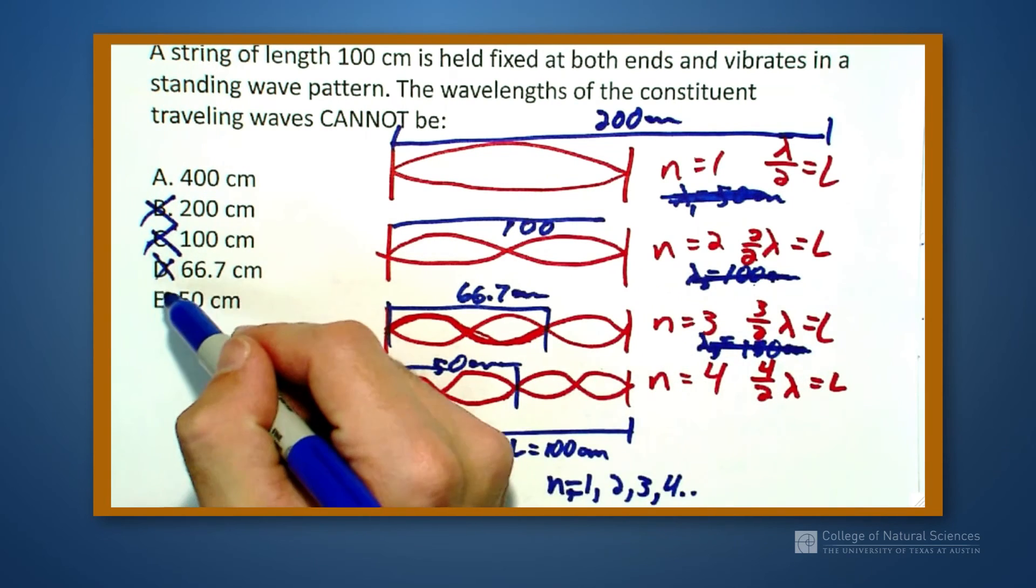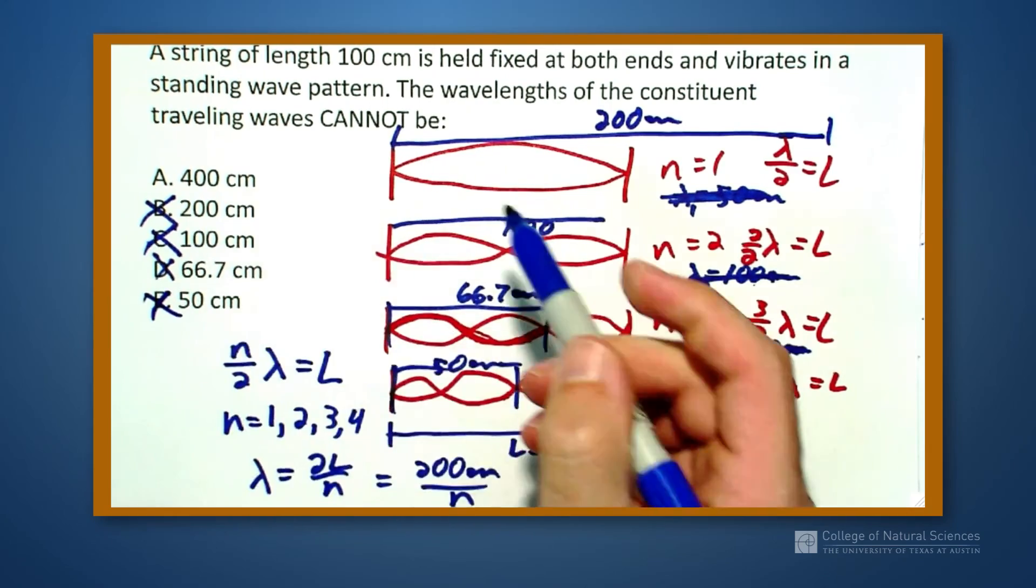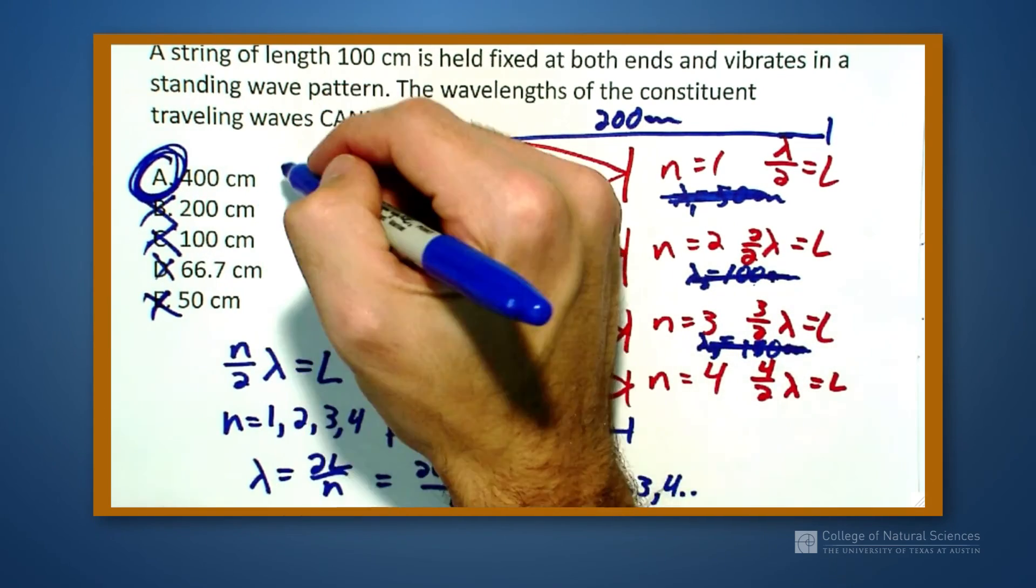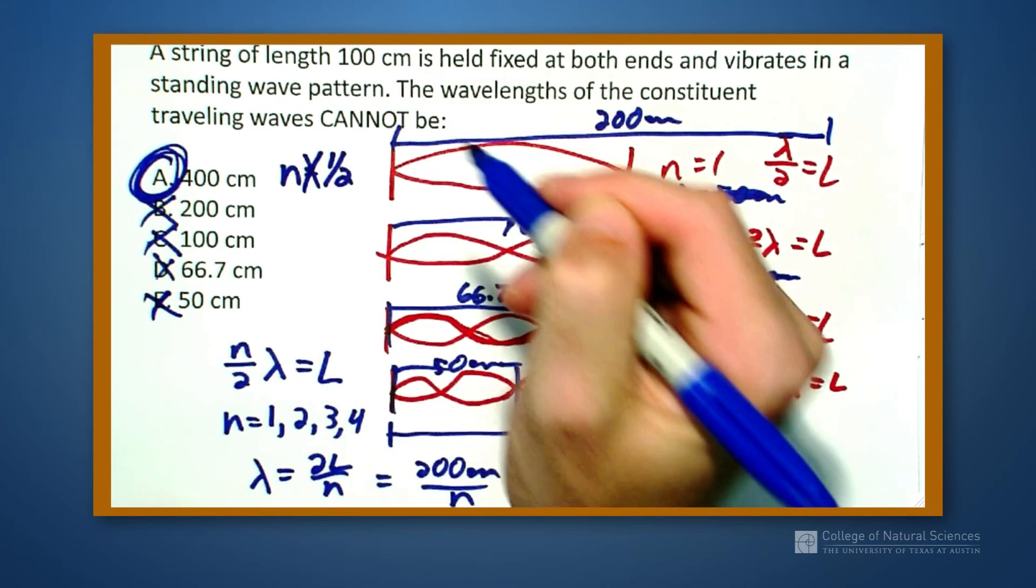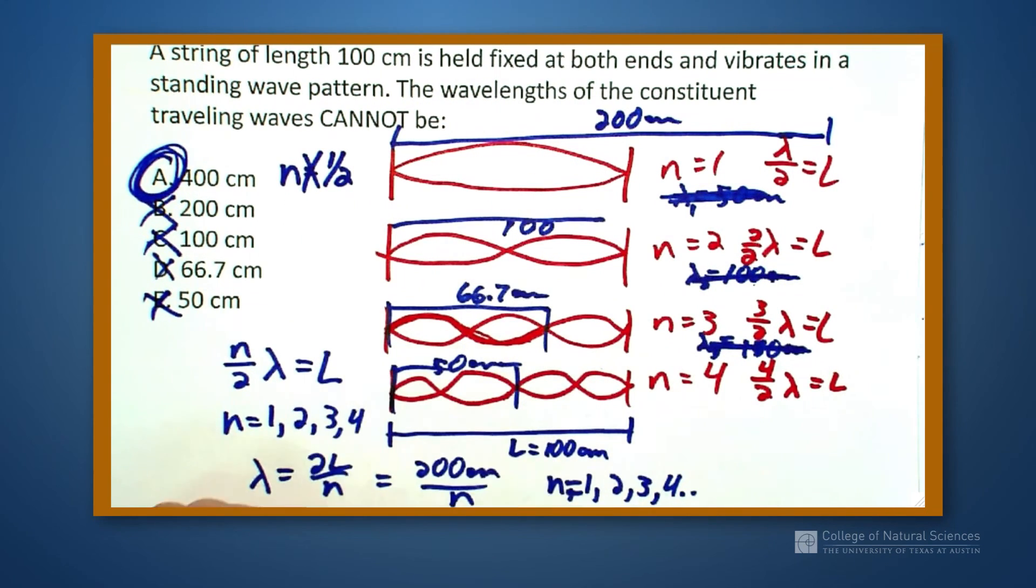So the only one that I can't get is 400 because for 400, n would have to be equal to 1 half. But we're not allowed to have n equal 1 half for this.